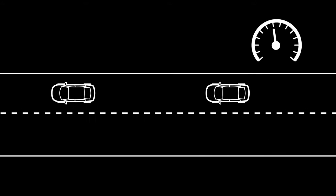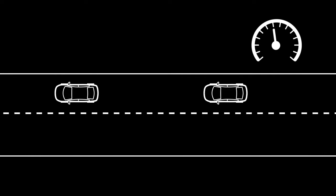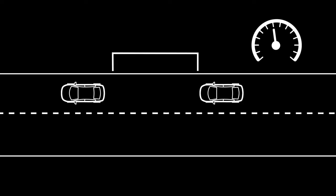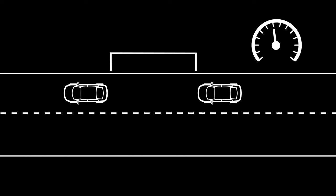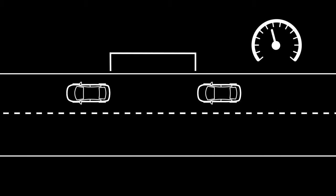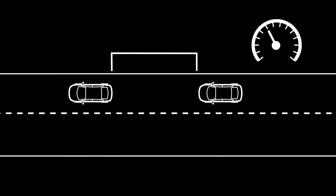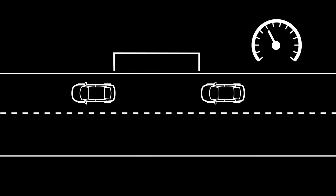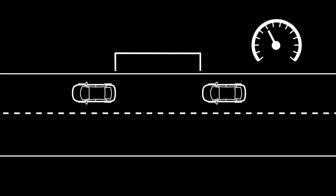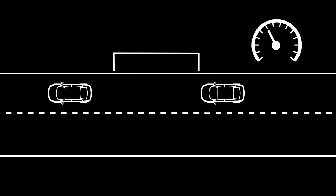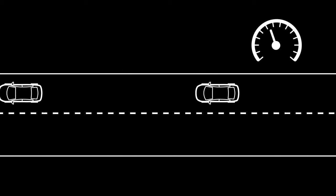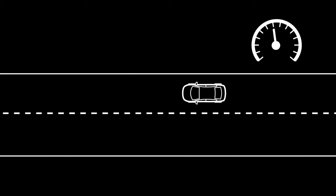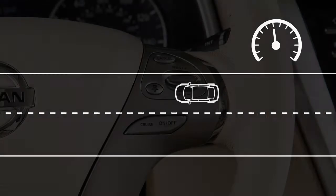If there is a vehicle in the traveling lane ahead, the ICC system adjusts the speed to maintain the distance from that vehicle. When the vehicle traveling ahead has moved from its lane of travel, the ICC system resumes the vehicle speed set by the driver.